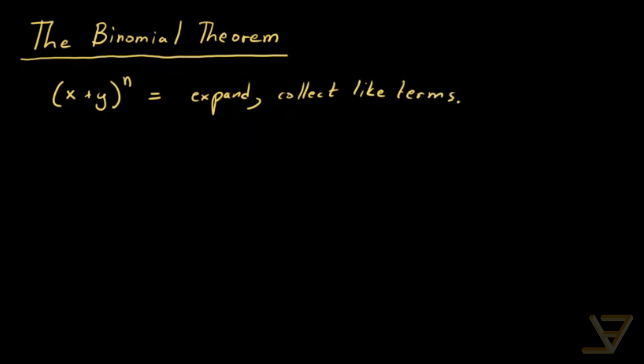So we want to know what this looks like after expansion and collecting like terms. Let's do an example for n equals 2. For n equals 2, we have x plus y squared, and that's x plus y times x plus y. And what we find by the distributive law is that this is equal to xx plus xy plus yx plus yy.